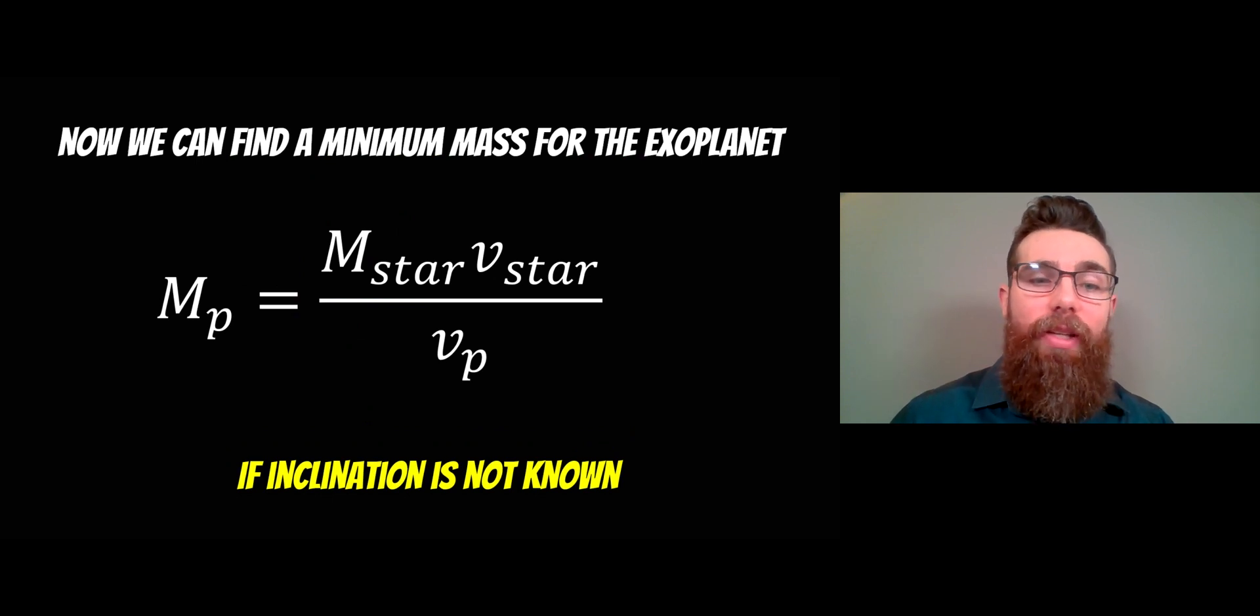So now we can find a minimum mass for this exoplanet because we've got a velocity for it. Now it's worth noting that it's a minimum mass because we don't necessarily know what the inclination is. So we're assuming that we're looking completely edge on and we're getting the maximum radial velocity when it's traveling towards us.